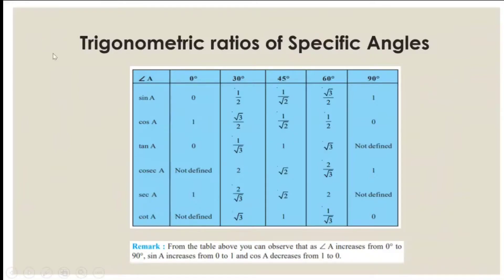We need to know the values of sine A, cos A, and tan A for angles 0°, 30°, 45°, 60°, and 90°. Once we know sine, cos, and tan, cosec A is the reciprocal of sine A, sec A is the reciprocal of cos A, and cot A is the reciprocal of tan A. So mainly we need to find the values of these three trigonometric ratios for angles 0°, 30°, 45°, 60°, and 90°.